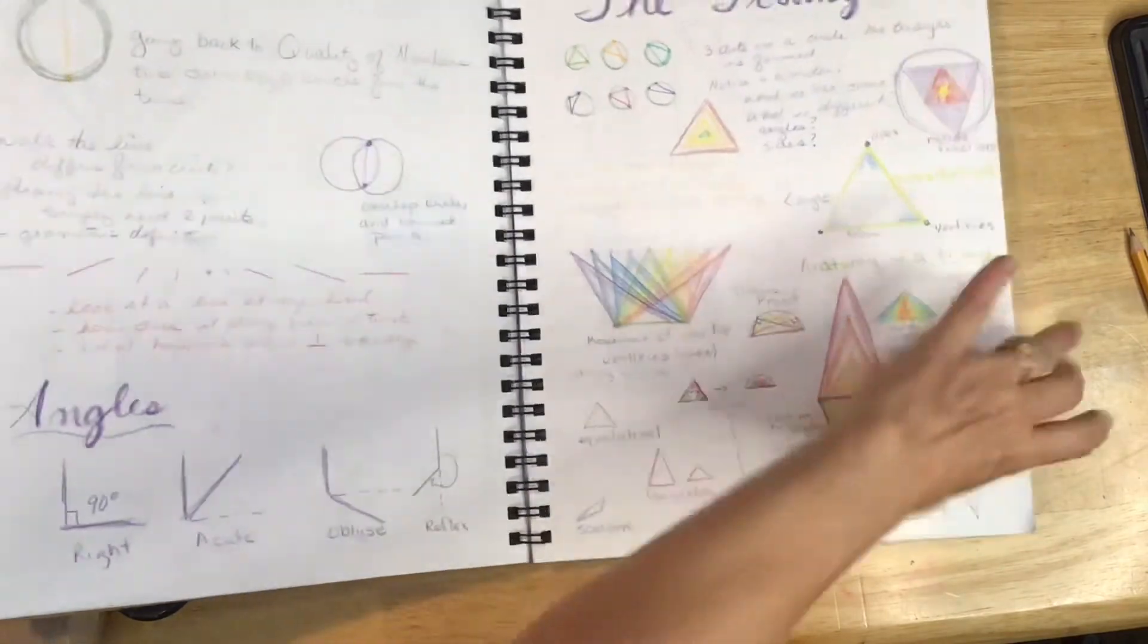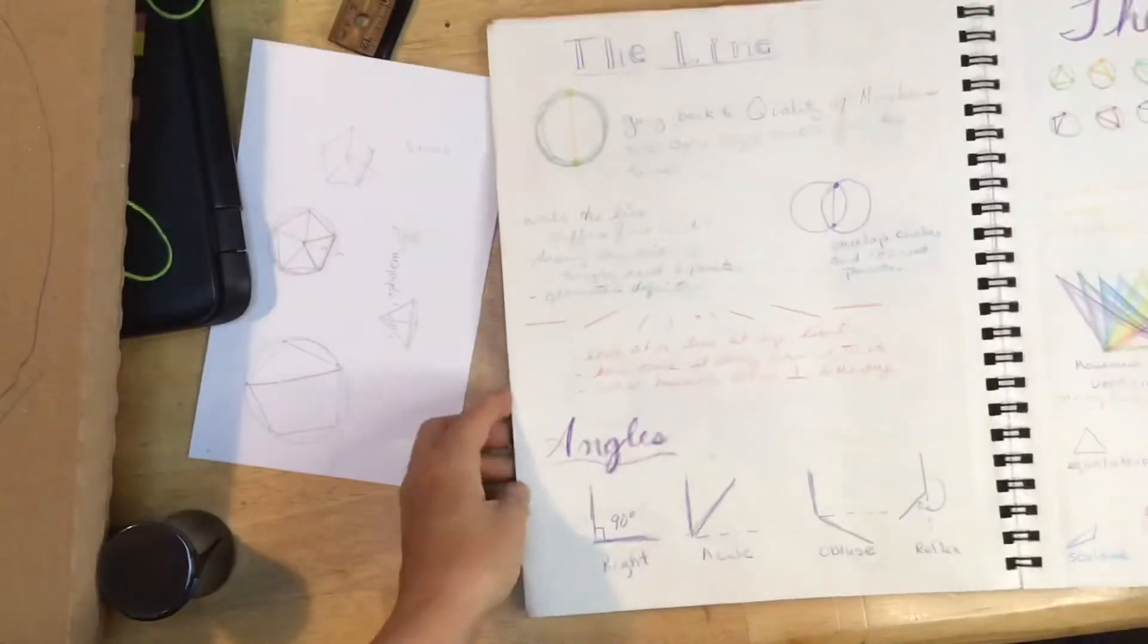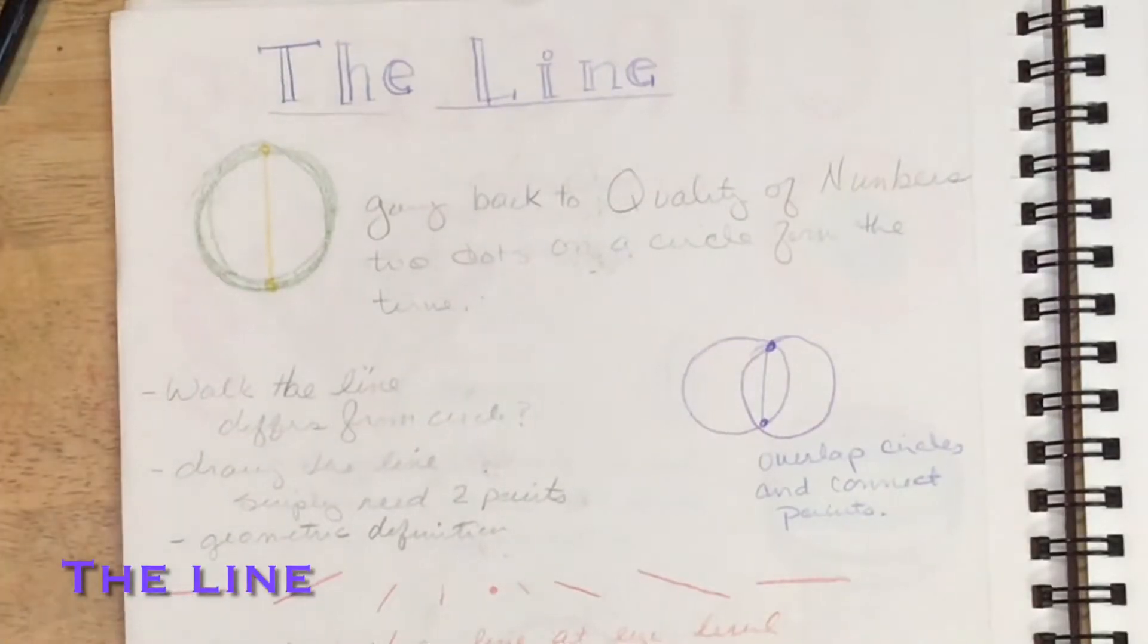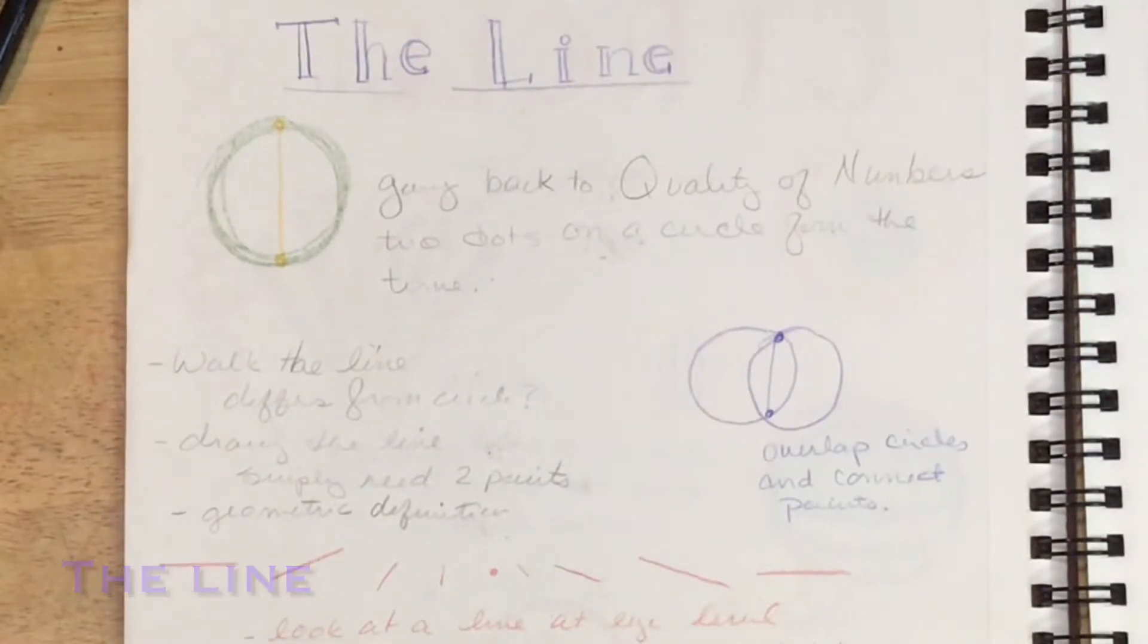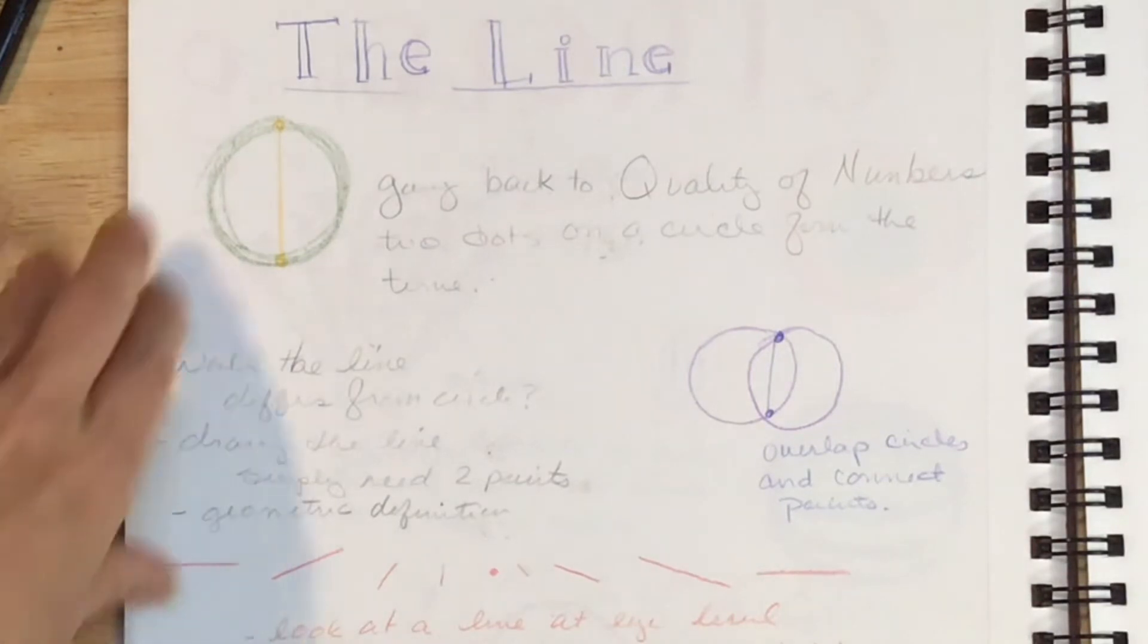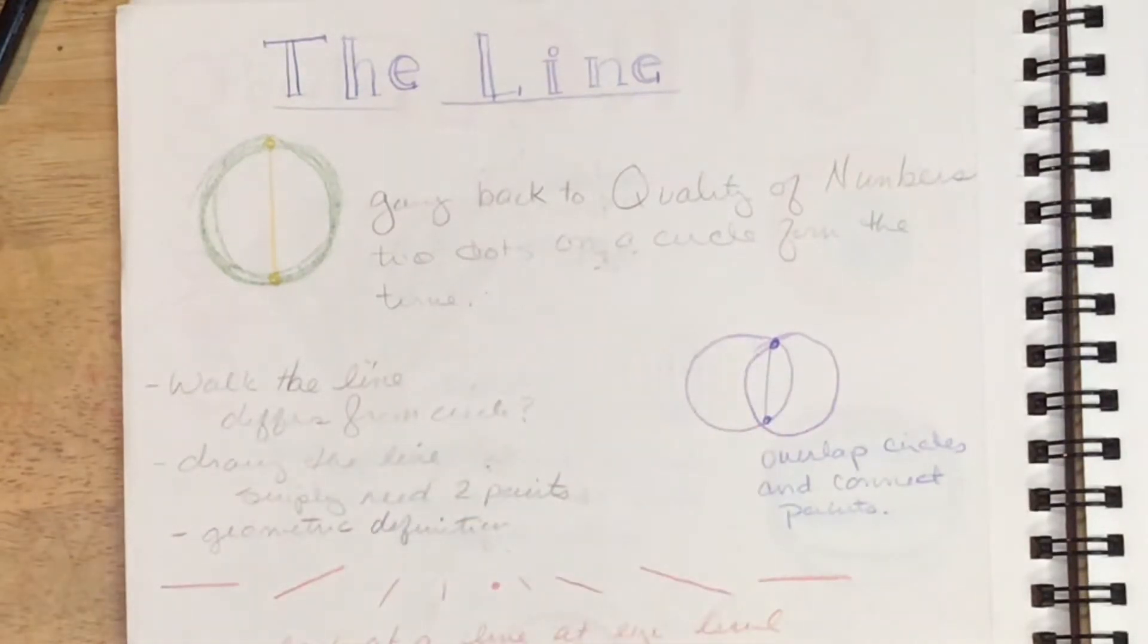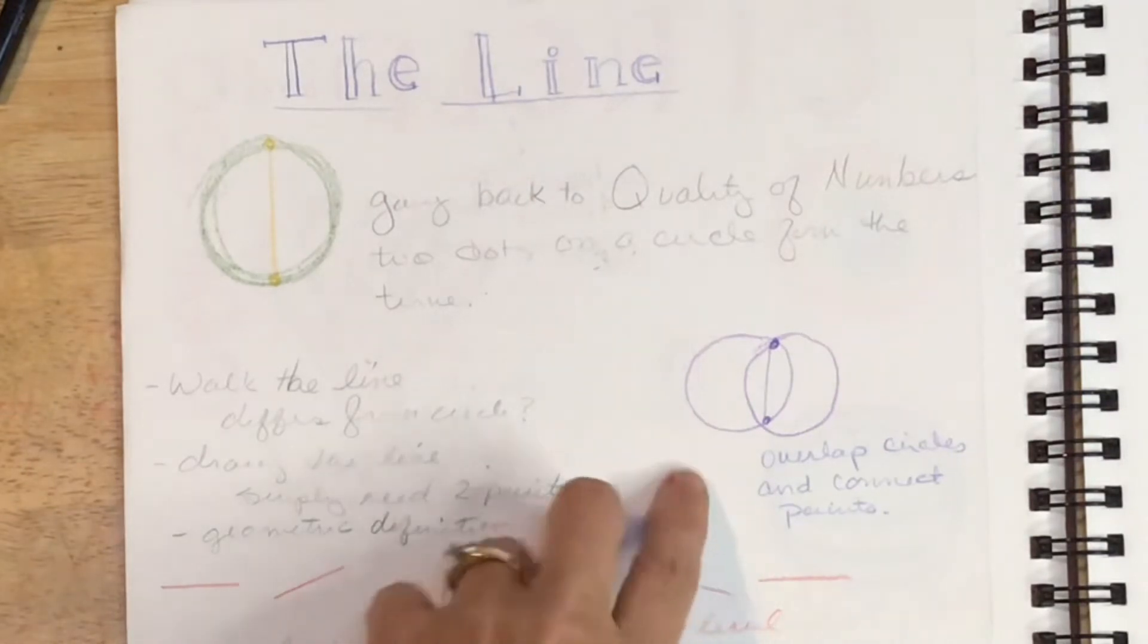Moving on to the line, which is not usually done in Waldorf geometry that I have seen. But going back to where I said I wanted to bring forth what we did in her early years and bring each of the forms out of the circle, we can do that by finding dots or intersecting circles. And where you have two points, you can make a line. And this will also bring continuity to high school geometry where we talk about Euclid's proofs and how they came about deciding what a line segment was.